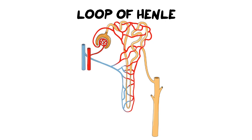Hi everybody and welcome back to Ms. Angler's biology class. I am Ms. Angler. In today's video we are going to be looking at the loop of Henle and its role in maintaining osmoregulation in the kidney. We are going to focus specifically on structures and how they do their jobs, but the sodium potassium pump explanation is in a separate video because it requires a little bit more detail than I'm going to include in this introduction.